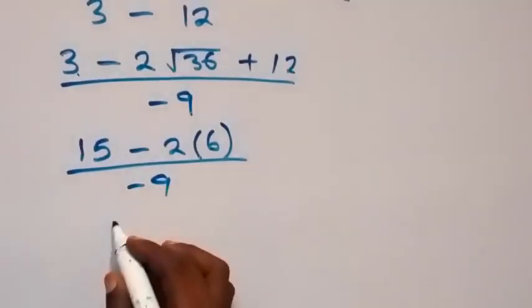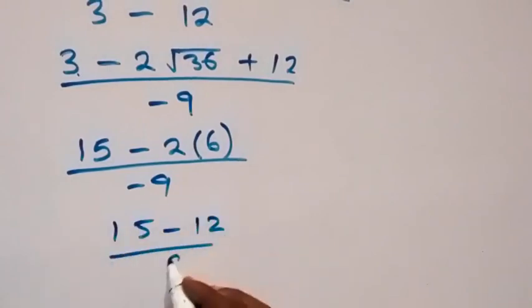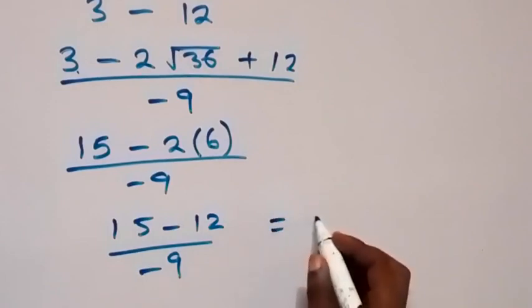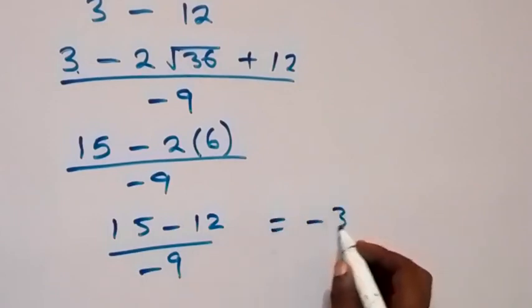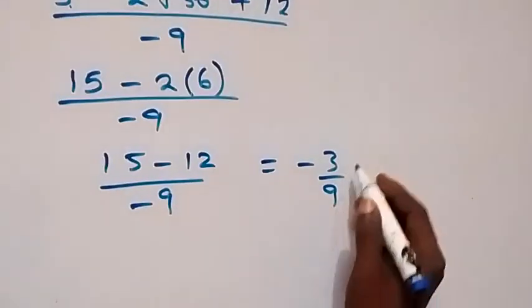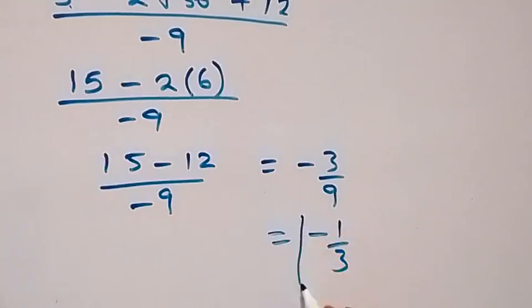This gives us 15 minus 12 over minus 9, which is the same thing as 3 over minus 9, which is minus 3 over 9. When we reduce this, we have minus 1 over 3. So here we have the solution to that problem.